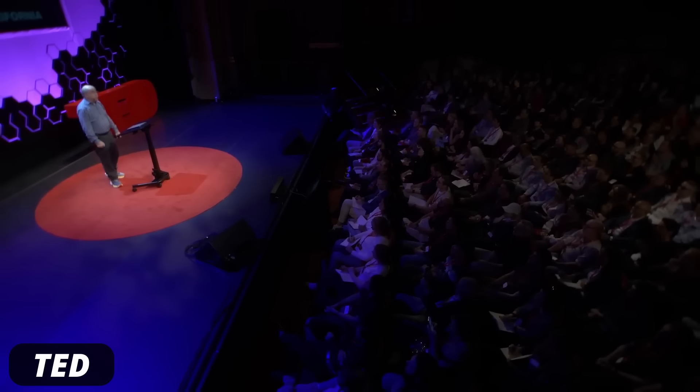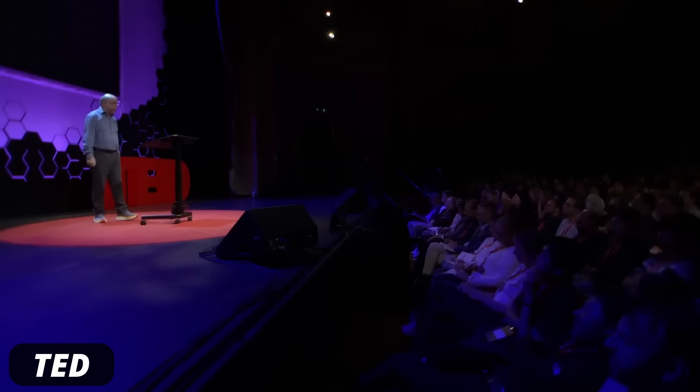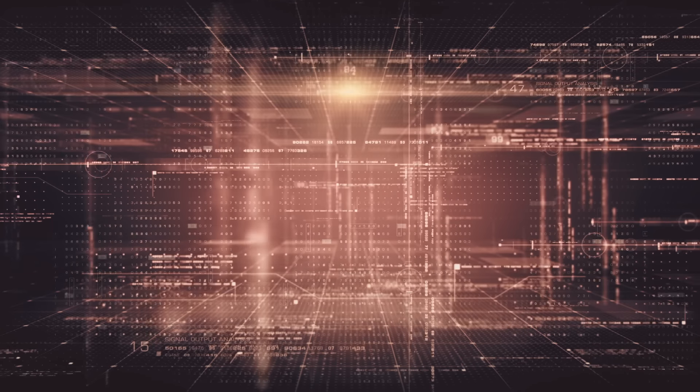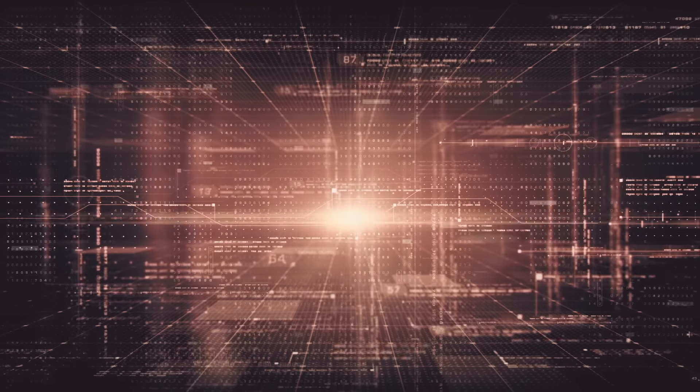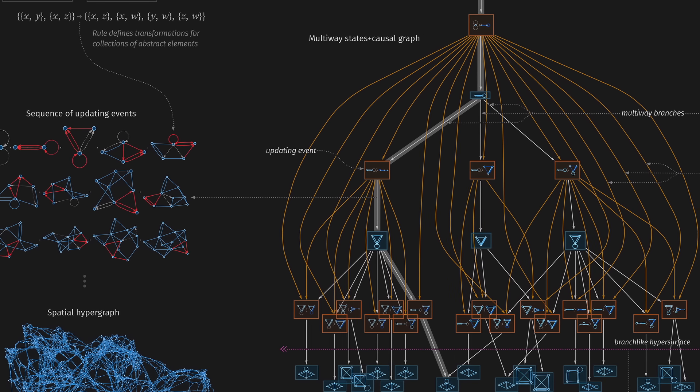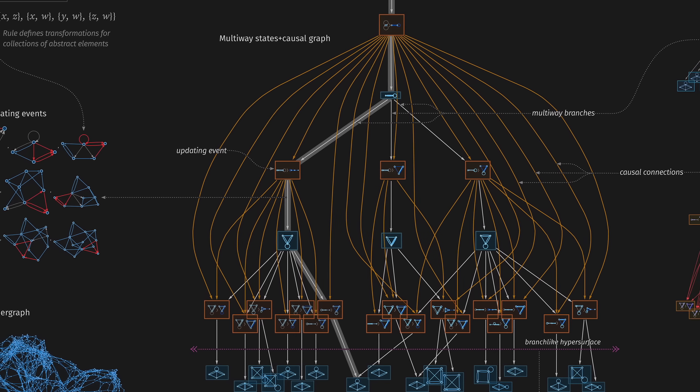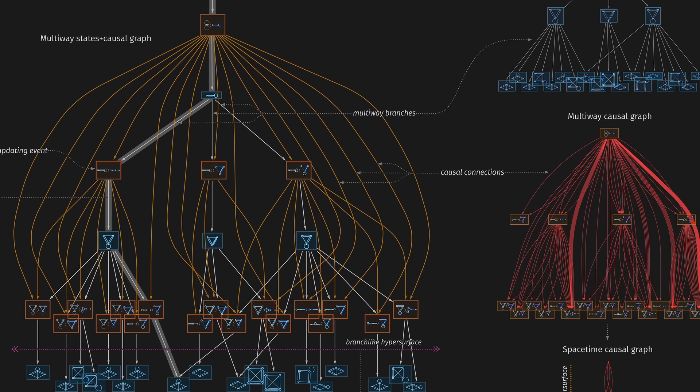Wolfram is a computer scientist and mathematician, probably best known for the math software Mathematica. But he also has the ambition to explain everything, and he wants to do it with computer code. His theory of everything is basically an attempt to put the simulation hypothesis on solid mathematical basis. He's looking for code that will produce fundamental physics as we know and like it, with gravity and the particles in the standard model.